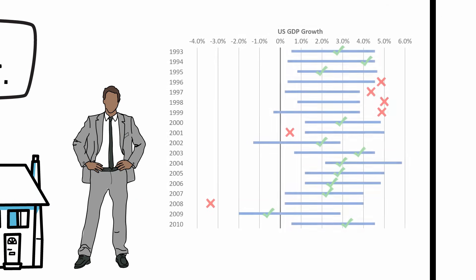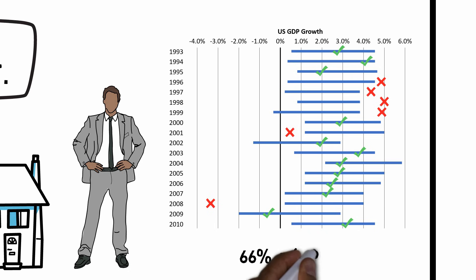Here's how economists have forecasted the GDP during the 18 years between 1993 and 2010. In the chart, the bars represent the area where the economists have said that GDP growth has a 90% chance of ending up. As you can see, the economists have been correct 12 times out of 18, or only 66% of the time. That is quite far from their stated 90%.